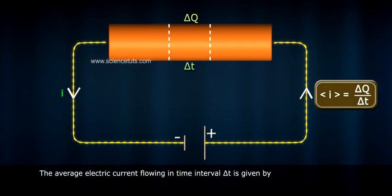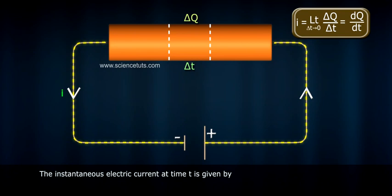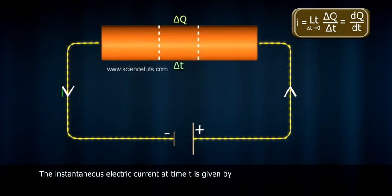The instantaneous electric current at time t is given by I = lim(Δt→0) ΔQ/Δt = dQ/dt.